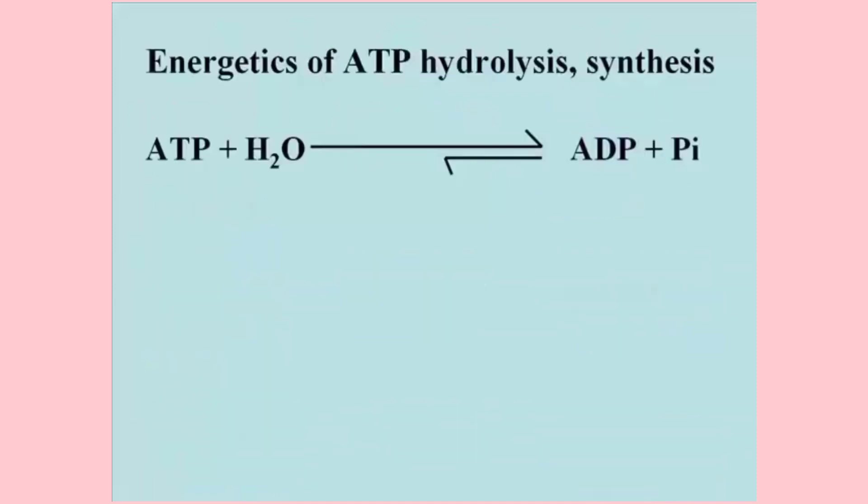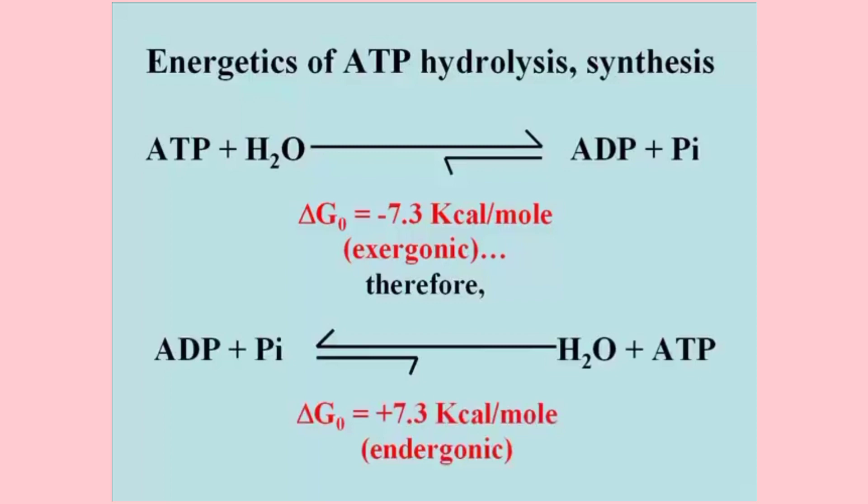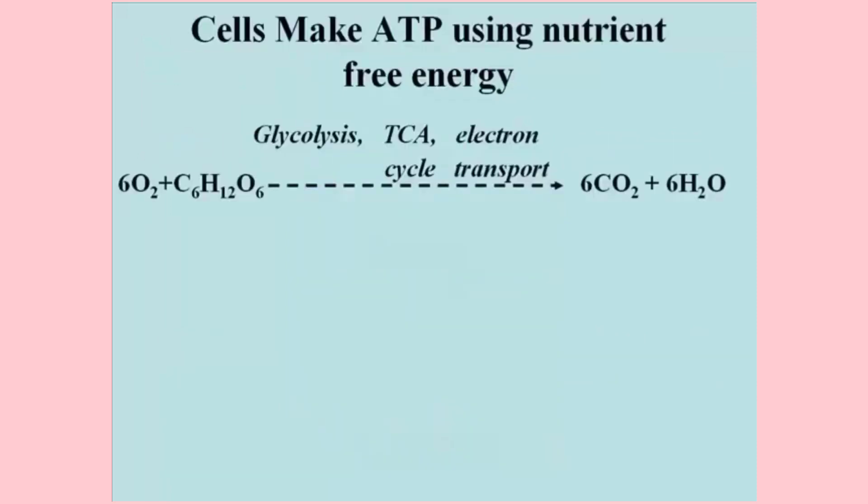Now let's recall just how much free energy is available from ATP. ATP hydrolysis is very exergonic. The standard free energy change, delta G zero, is equal to minus 7.3 kilocalories per mole of ATP hydrolyzed. The dehydration synthesis of ATP is therefore highly endergonic to the tune of plus 7.3 kilocalories per mole. The free energy needed to do this reaction comes from the fermentation or respiration of nutrient molecules like glucose.